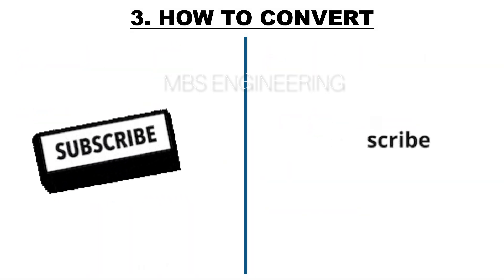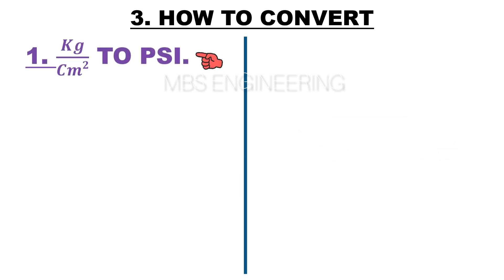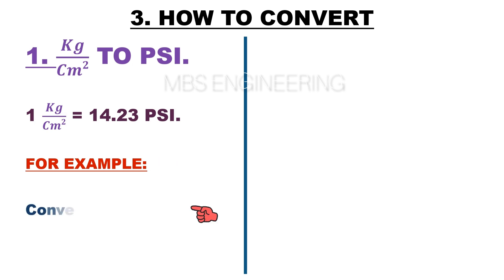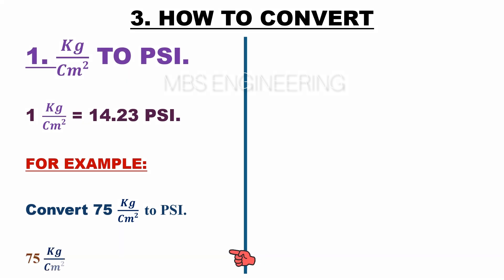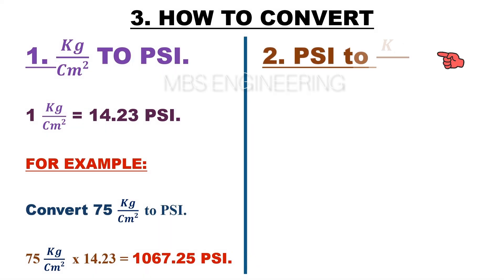Next, we will learn the third topic: how to convert kilogram per centimeter square to PSI. Please remember that one kilogram per centimeter square is equal to 14.23 PSI. Sample example: convert 75 kilograms per centimeter square to PSI. 75 kilograms per centimeter square multiplied by 14.23 — therefore the obtained pressure value is 1067.25 PSI.